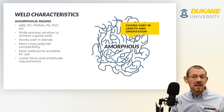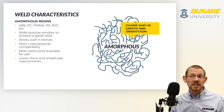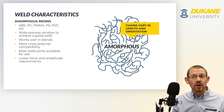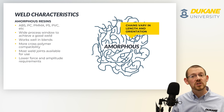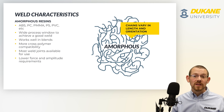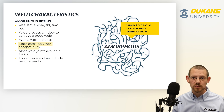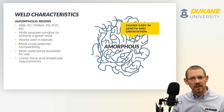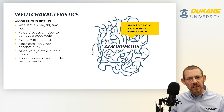Amorphous resins — ABS, polystyrene, acrylic, PVC, polycarbonate — have a wide process window to achieve a good weld. Because of that softening behavior, we can reshape and reform them over a broad temperature range, which makes them easy to process. They also work really well in blends, with a lot of cross-polymer compatibility. Things like PC-ABS blends are ubiquitous in consumer products and the automotive industry.